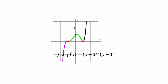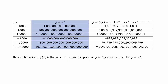Why does the leading term dominate? Algebraically, plugging in 1,000; 10,000; 100,000 and the negative equivalents shows that both x^5 and the actual expanded polynomial go to positive or negative infinity together — they behave very similarly. That's why it's enough to look only at the highest power of the polynomial to determine end behavior. In this case, as x goes to plus or minus infinity, the function behaves very much like x to the fifth.